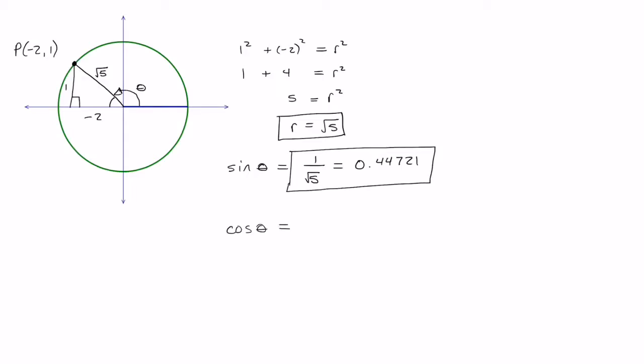Cos is adjacent over hypotenuse. So adjacent to the reference angle is negative 2 and the hypotenuse is root 5. And again, just punch into your calculator. Negative 2 divided by the square root of 5 and you should get negative 0.89443.